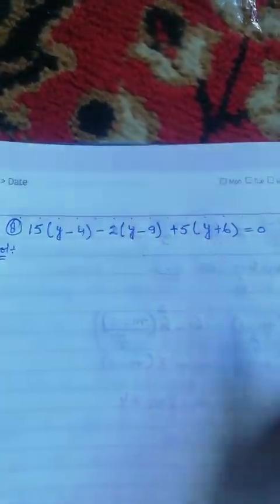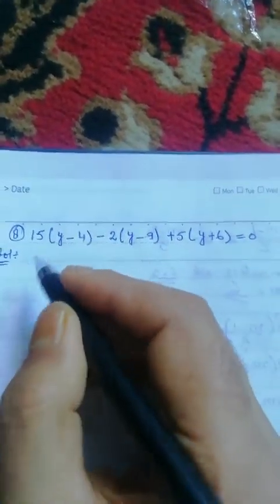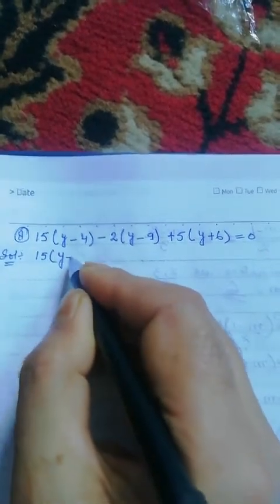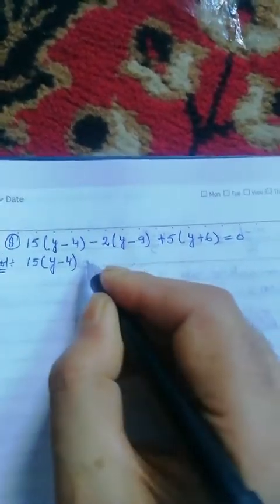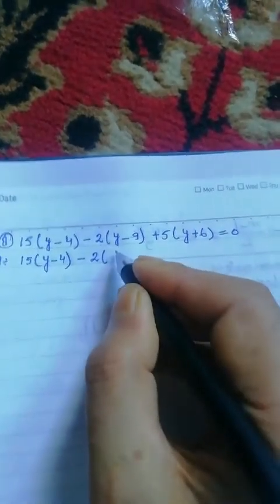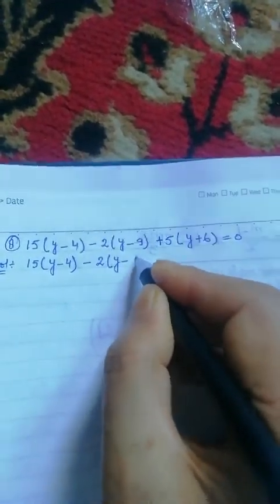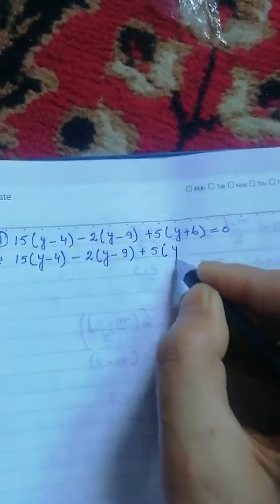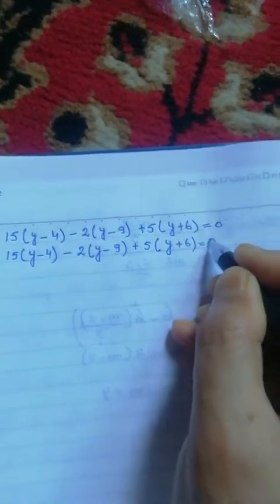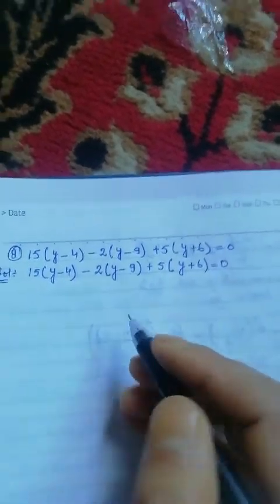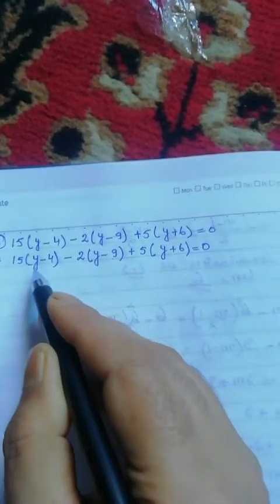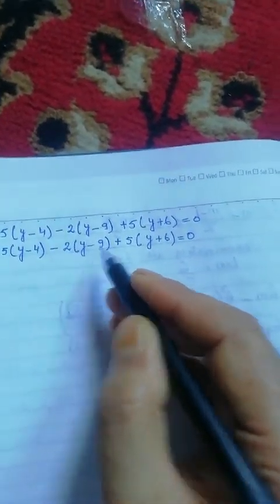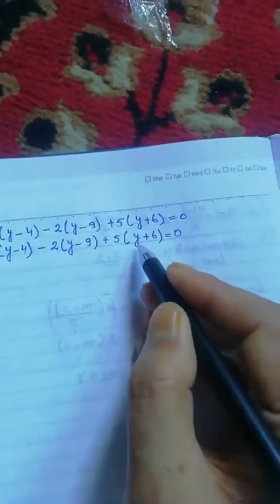It has 15 into y minus 4 minus 2 into y minus 9 plus 5 into y plus 6 is equal to 0. Simply 15 times y minus 4 minus 2 times y minus 9 plus 5 times y plus 6.